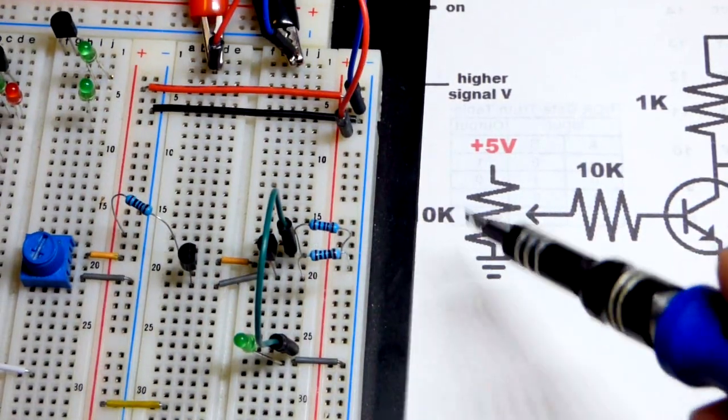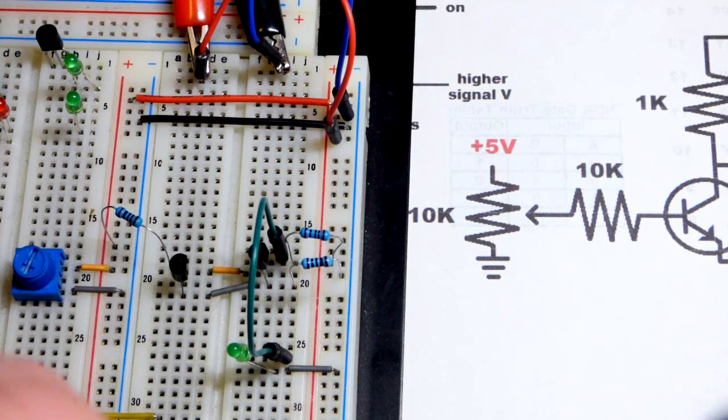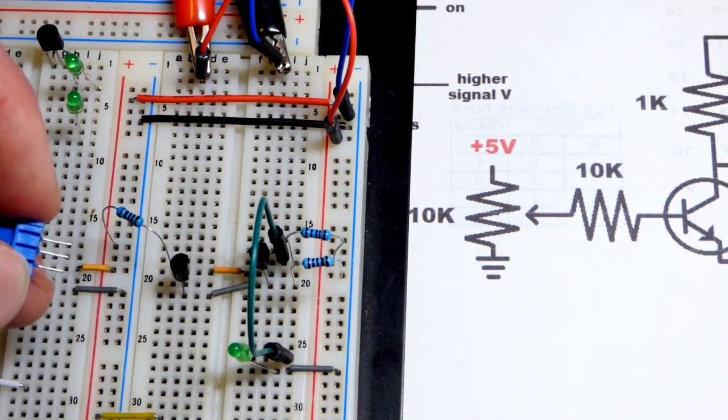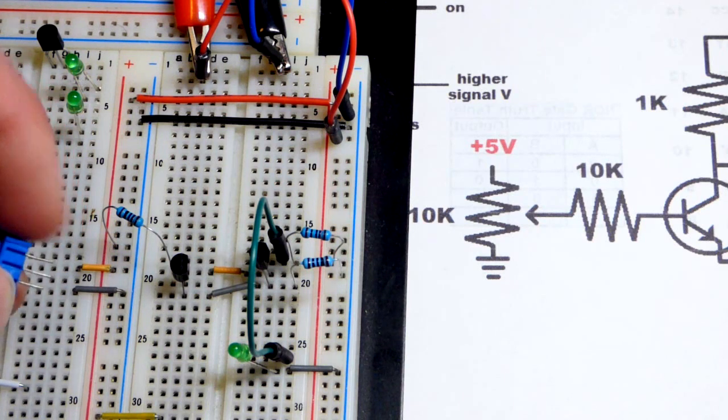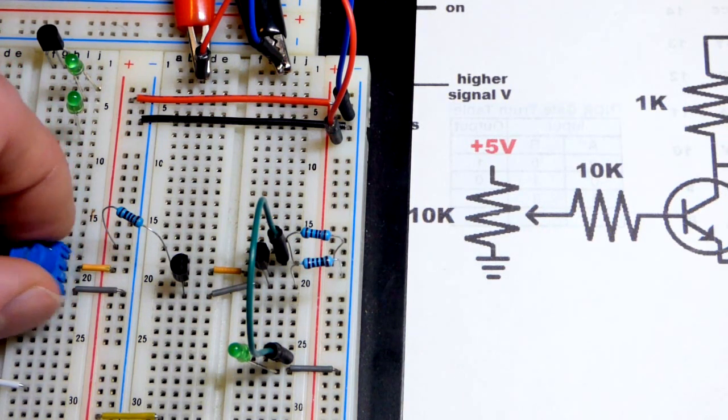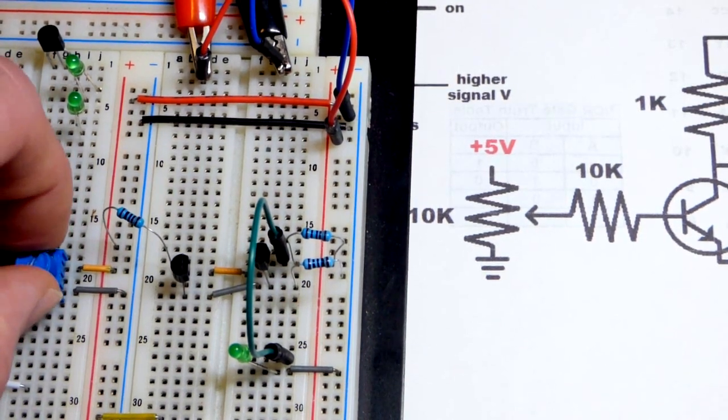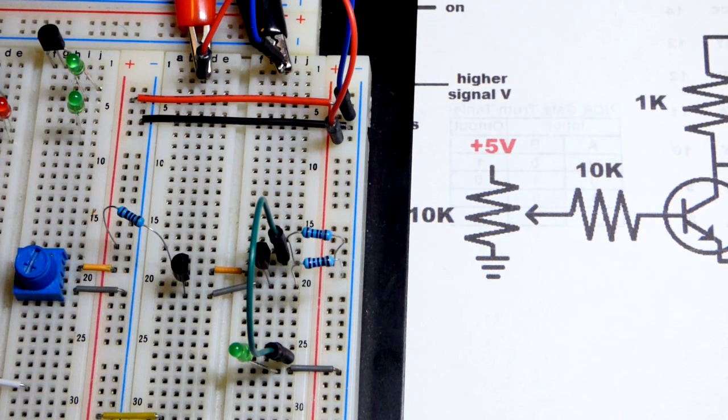We're going to wire it to the middle pin of a trim pot. This is a 10 kilo ohm trim pot and nicely it has wires. Luckily the middle wire is the wiper, the other two wires at the end are the ends of the 10,000 ohm resistive element.